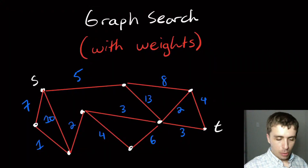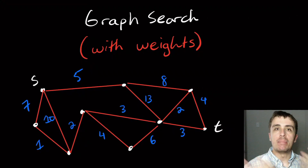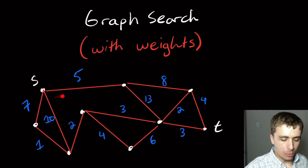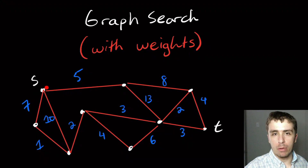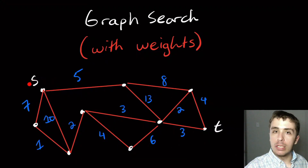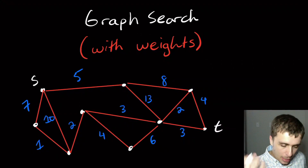I want to talk about graph search but now with weights. We talked about breadth first search before, which finds the minimum number of edges to traverse from vertex s to vertex t. But now we're going to have a certain weight on each edge — a certain distance. So if we wanted to go from s to a node along this edge, we incur a cost of five units. What I want to know is: what is the route to get from s to t with the lowest total cost?